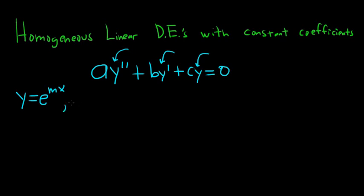Then you differentiate. When we take the derivative, we use the chain rule. It's e to the mx times the derivative of mx, which is m. So it would be m e to the mx. Then if you do it again, you get another m. So you would get m squared e to the mx.